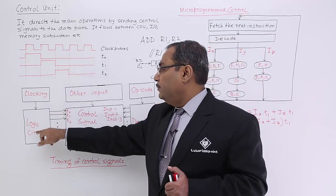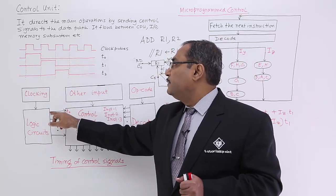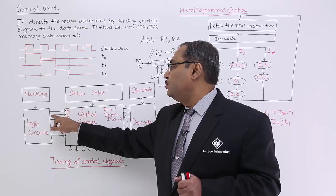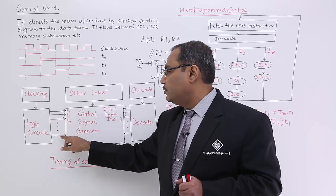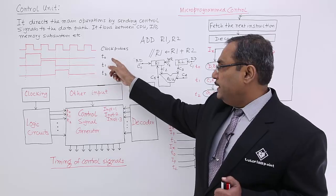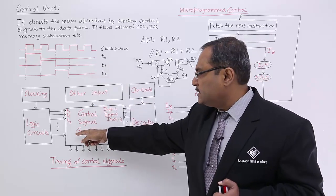This is a clocking from there. I will be having say T0, say T1, say T2 and so on in this way. You know the meaning of this T0, T1, T2 I have discussed.